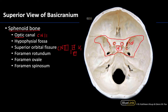Next is the roundest of our foramina — the foramen rotundum — which allows for exit of V2, the maxillary division of the trigeminal nerve. And then the oval-shaped foramen, posterior to the rotundum, is the foramen ovale, which allows for exit of V3, the mandibular division of the trigeminal nerve.